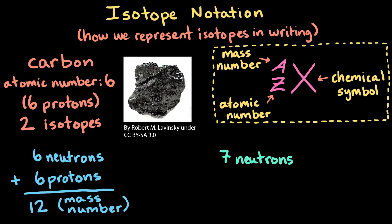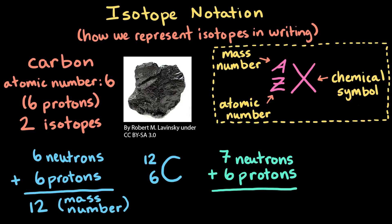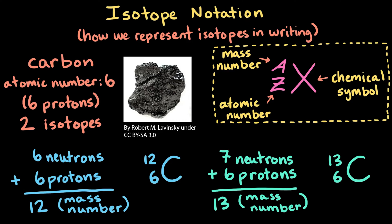So, the notation for this isotope of carbon would look like this: we have the chemical symbol C, with the mass number 12 written at its top left, and the atomic number 6 written at its bottom left. For the isotope with 6 protons and 7 neutrons, the mass number is 6 plus 7, or 13. So the notation for that carbon isotope would be the chemical symbol C, with the mass number 13 written at its top left, and the atomic number 6 written at its bottom left.